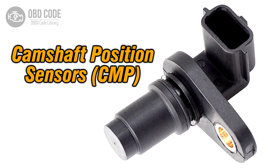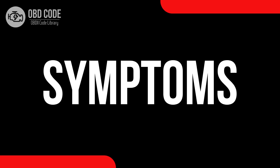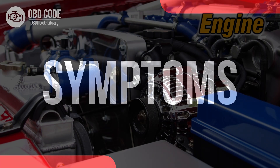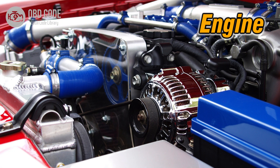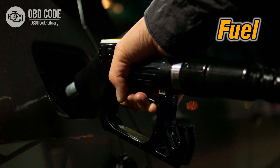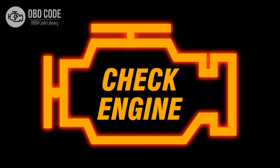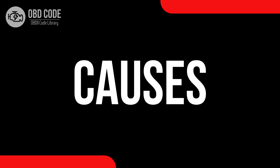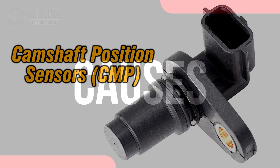This code is typically found in vehicles with variable valve timing systems. Symptoms of code P0020 include: 1. Reduced engine performance, 2. Rough idling, 3. Decreased fuel efficiency, 4. Illuminated check engine or service engine soon light on the dashboard.